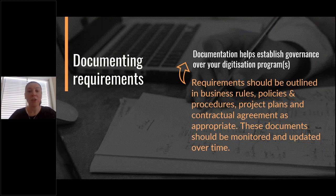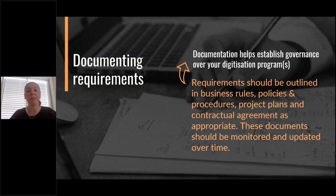How original records should be managed will depend on the records concerned and the intended outcomes of the digitisation program. Where original records will be retained, consider recollation requirements, rehousing — an optimum time for that — and transfer requirements. If records have long-term accountability requirements or are required as state archives, rehouse them into archival housings or containers. Where original records will be destroyed under GA45, consider when they can be destroyed, how destruction will be documented, and how internal authorisation will be granted. Once you have determined all requirements, document and communicate them to establish governance. Requirements should be outlined in business rules, procedures, project plans, contractual agreements, etc., and reviewed at regular intervals or as circumstances change.